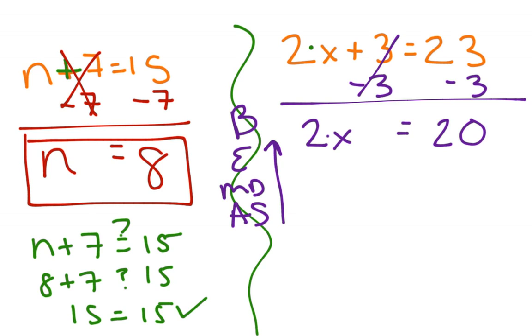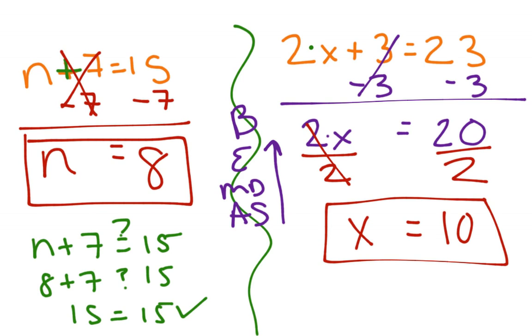You see that we still have one step that we have to deal with. We have to undo the times 2. We undo multiplying with dividing. So 2 divided by 2 would be 1, which is why we don't write it. We can just put x instead of 1x. And on the other side, our math to do 20 divided by 2 gives us 10. So we have a solution of x equals 10.